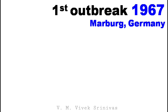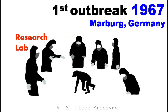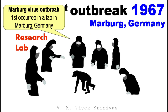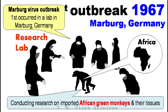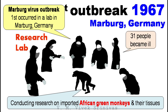The first well-known outbreak was in 1967 at a place named Marburg in Germany. The Marburg virus outbreak first occurred in a research laboratory in Marburg, Germany. The first people infected had been exposed to the virus by conducting research on African green monkeys and their tissues. These monkeys had been imported from Africa for research purposes. 31 people became ill — initially laboratory workers, followed by several medical personnel and their family members who had cared for them. In this incident, seven deaths were reported. This is the first well-known outbreak incident documented.